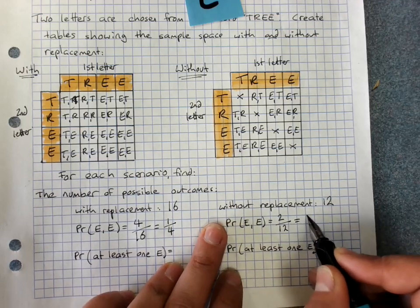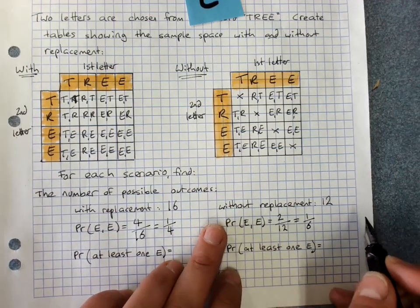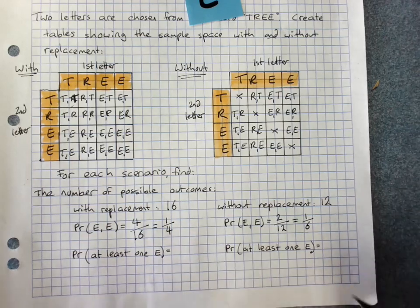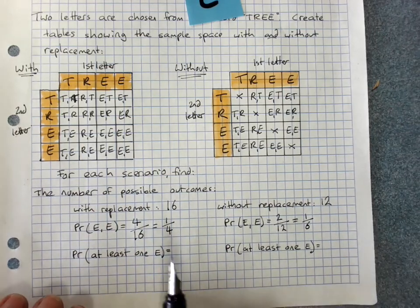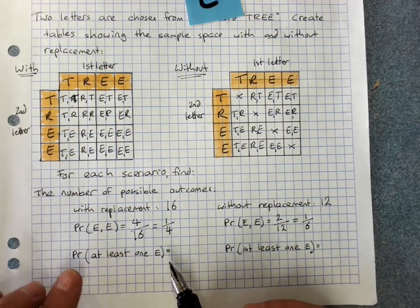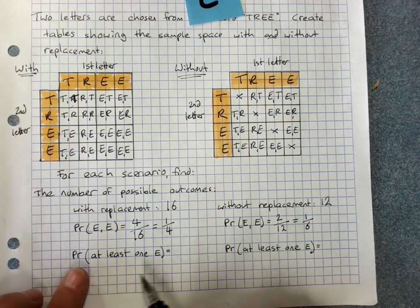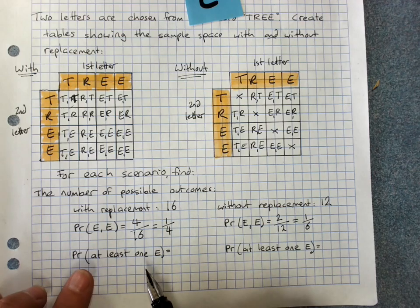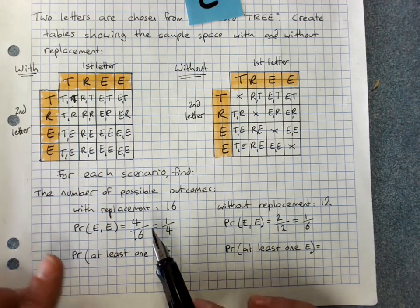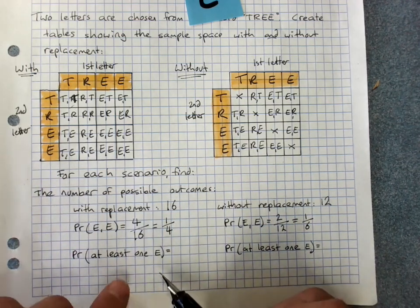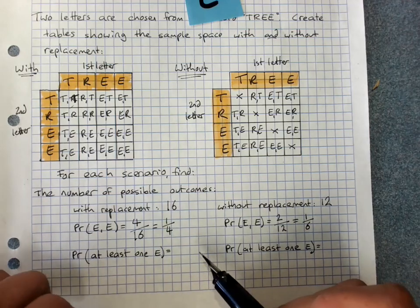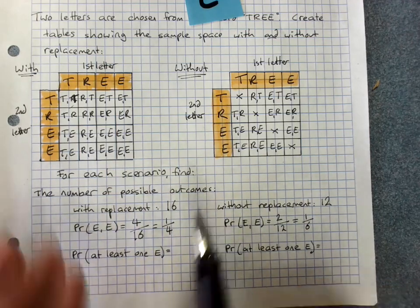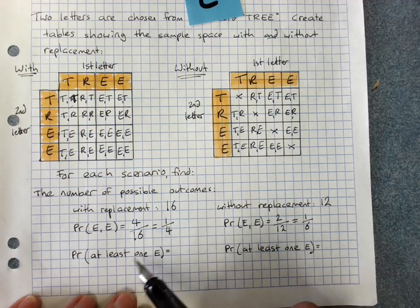Without replacement there's only two ways of getting two E's out of a total number of outcomes which is twelve, so that's one sixth. The probability of at least one E. At least one E says one or more, that is if I said you pass if you've got at least one E for excellent, two would be fine, none would not be fine.